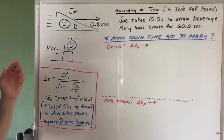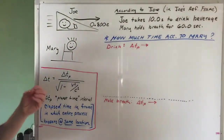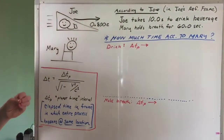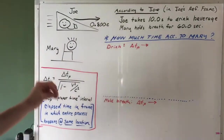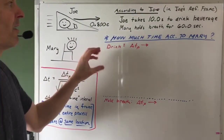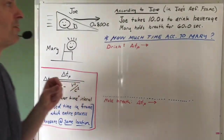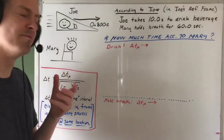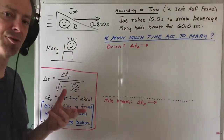The questions that we want to answer in this problem are: how much time do each of these processes take according to Mary? That is, according to Mary, how long does it take Joe to drink his beverage? And according to Mary, how long does it take Mary to hold her breath?